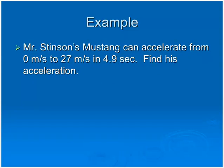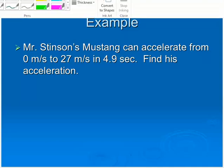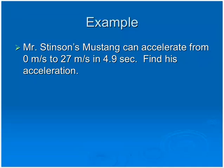Mr. Stinson's Mustang can accelerate from 0 meters per second to 27 meters per second in 4.9 seconds. Find his acceleration. His initial speed is 0, his final speed is 27, and the time is 4.9 seconds.